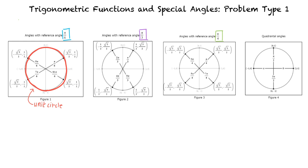For example, angles with the reference angle pi over 4 have very similar coordinate points, square root 2 over 2 comma square root 2 over 2. The only thing that differs is a positive or negative sign on these points, based on the quadrant that the angle falls within.